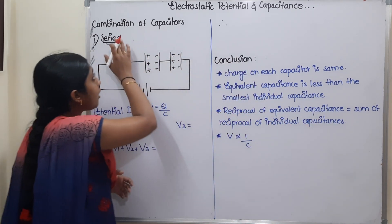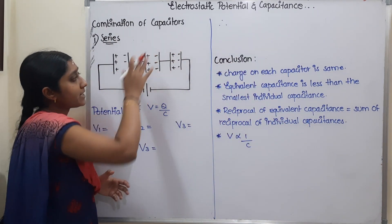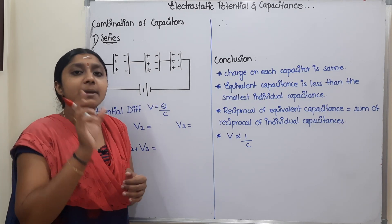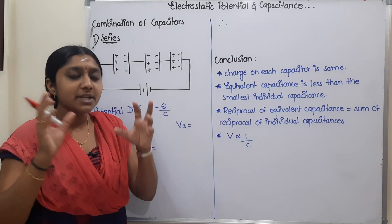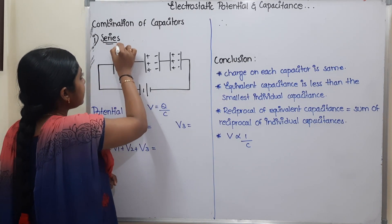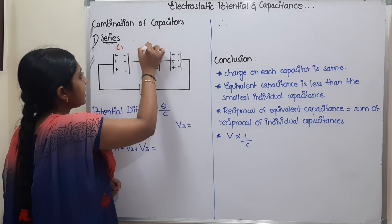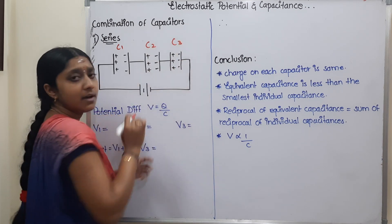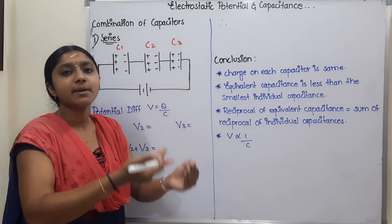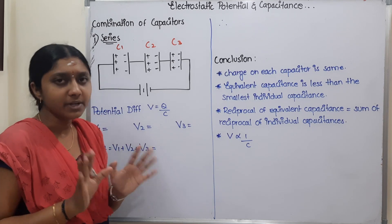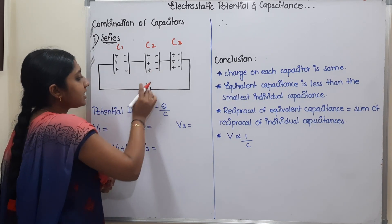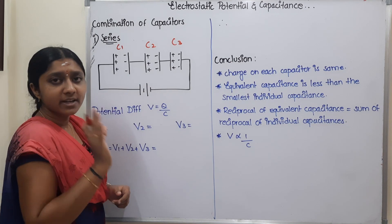Now we will talk about the combination of capacitors. First, we are going to combine various capacitors in series — C1, C2, C3. We will draw three capacitors and derive the formula. We connect a voltage source with the battery.